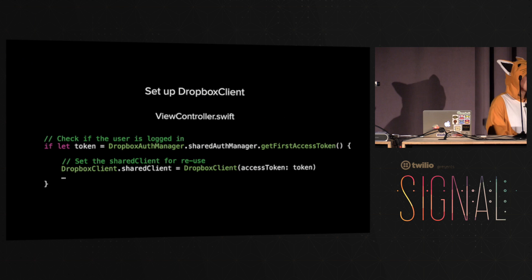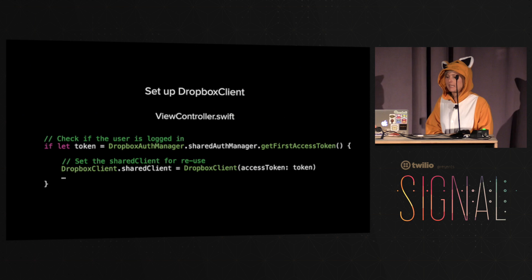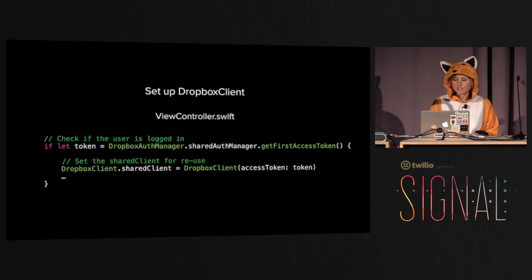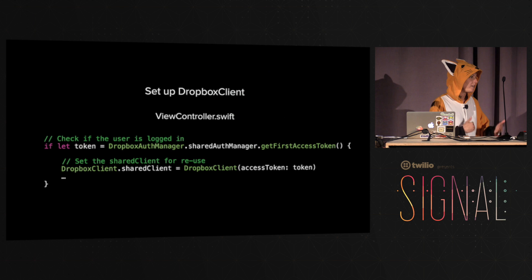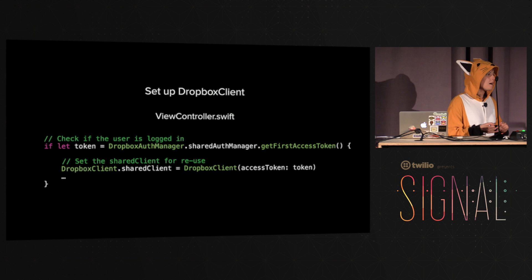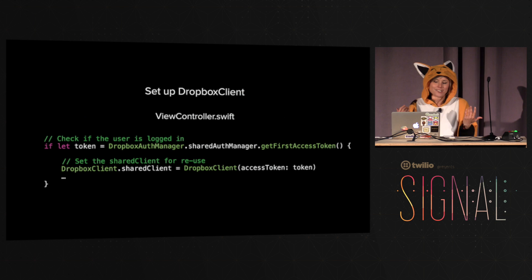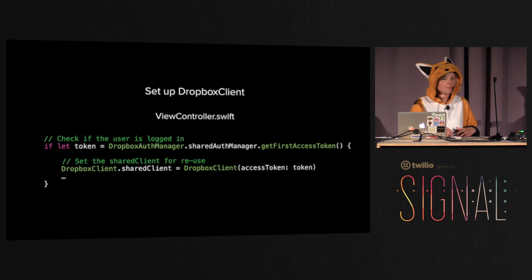We use a switch statement to look at the enumerated result. We either have a success result or an error result, and they have different objects — either a token or an error object with an optional description. Once the user is logged in and we've stored the token, we can start working with the Dropbox client and making API requests. Here's an example of initializing the Dropbox client using the first access token. You can have multiple users log into multiple Dropbox accounts — a work account and a personal account — but for this photo app we're just using one Dropbox account.